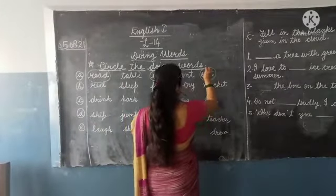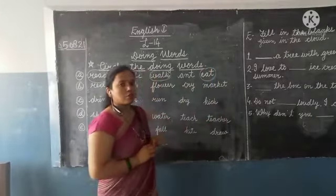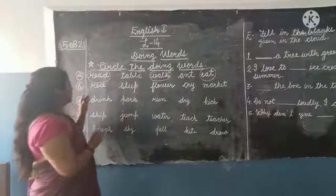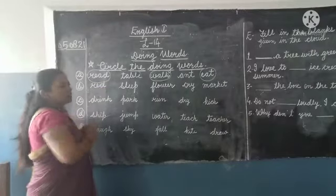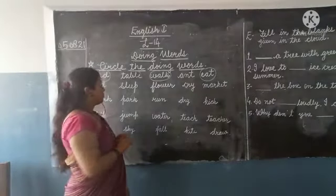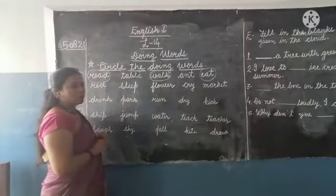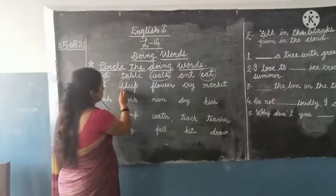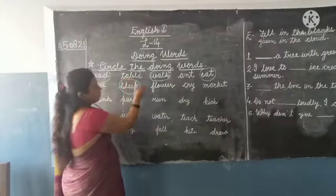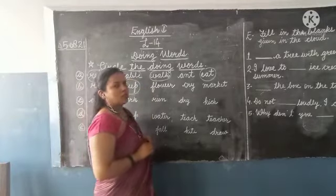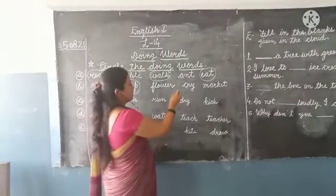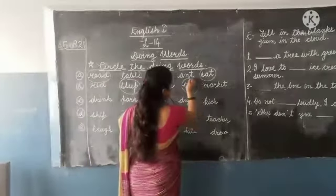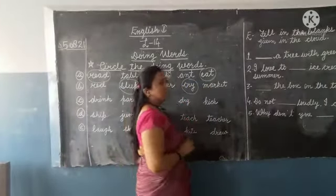It can be asked in your exam, so practice it. Set B: 'Red' is the name of a color. 'Sleep' - sleep is an action word or doing word, so we will circle sleep. 'Flower' is a thing name. 'Cry' is also an action word. 'Market' is a place name, so we will not circle it.